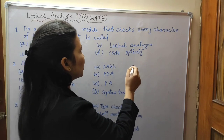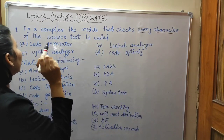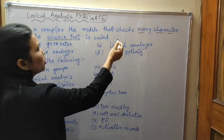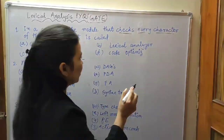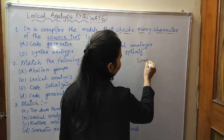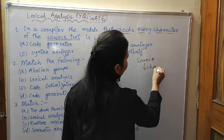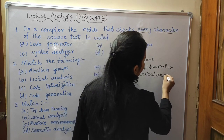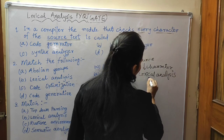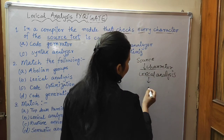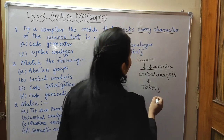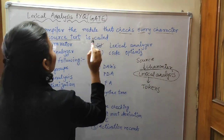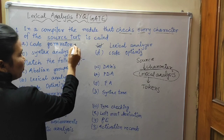Question one: In a compiler, the module that checks every character of the source text is called what? The source language is first read one character at a time. The lexical analysis phase takes characters as input and generates tokens as output. So the module that checks every character is the lexical analyzer.